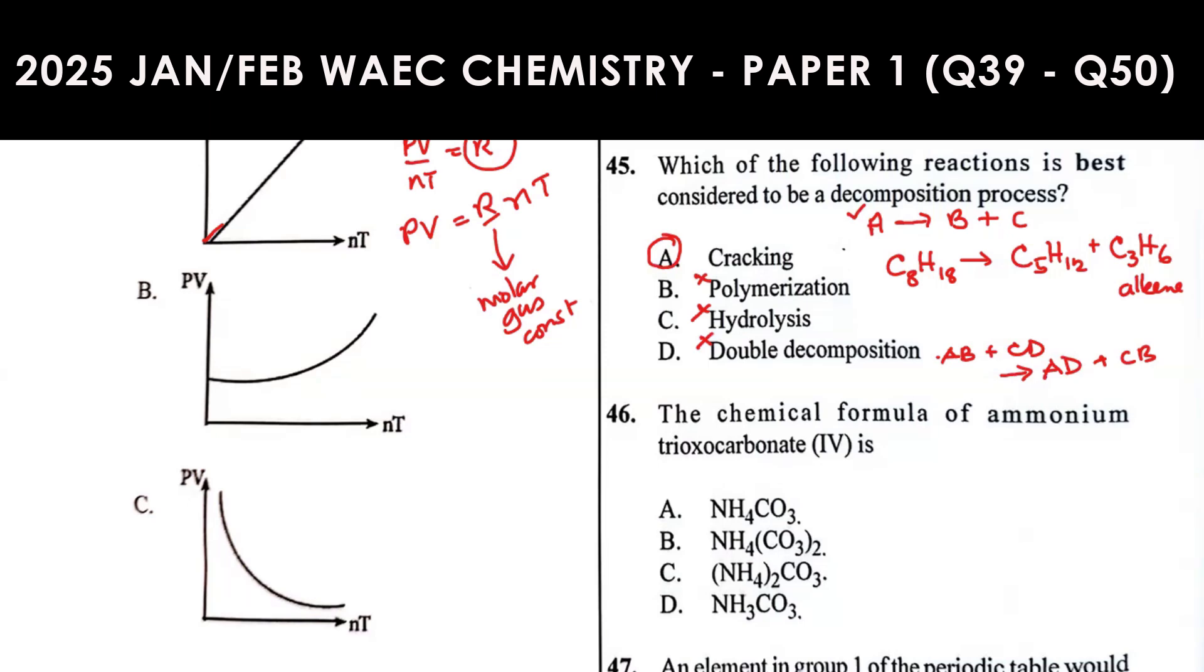Question 46: The chemical formula of ammonium trioxocarbonate(IV) is? NH4+ valency 1, CO3 2- valency 2. In exchange, these valencies are exchanged. Since NH4 is a radical, this will be in bracket: (NH4)2. And CO3 becomes 1, but 1 is always invisible, so we remove that bracket. It becomes (NH4)2CO3. That is option C.